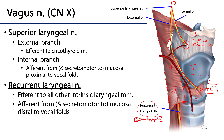The recurrent laryngeal nerve is also afferent from the mucosa of the larynx below the vocal folds, and it will be secretomotor to the mucosa below those folds as well. In addition, the recurrent laryngeal nerve has a branch that efferently serves the cricopharyngeal part of the inferior pharyngeal constrictor. So the external branch of the superior laryngeal nerve, the recurrent laryngeal nerve, and the pharyngeal plexus all serve that cricopharyngeal part — which is pretty impressive in terms of overall innervation.